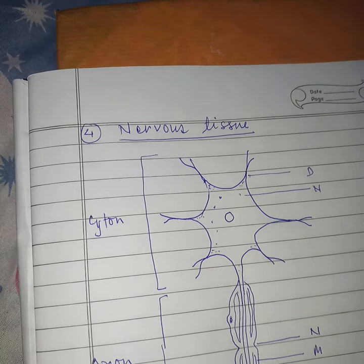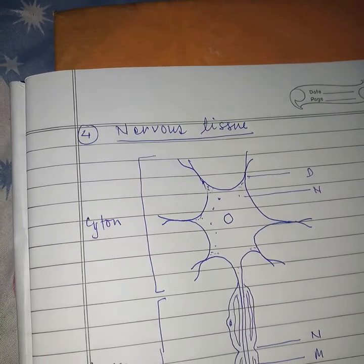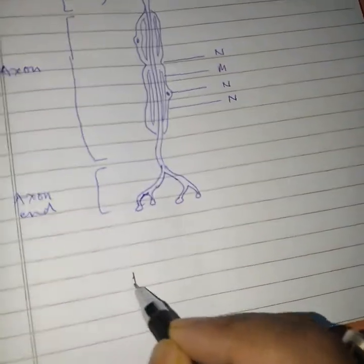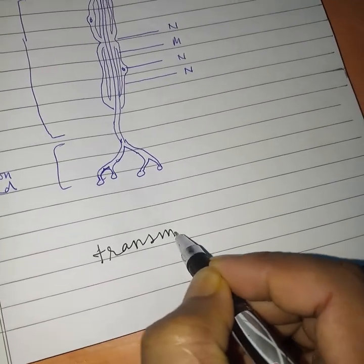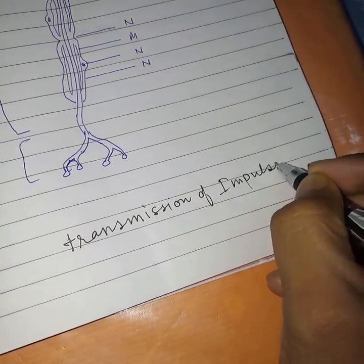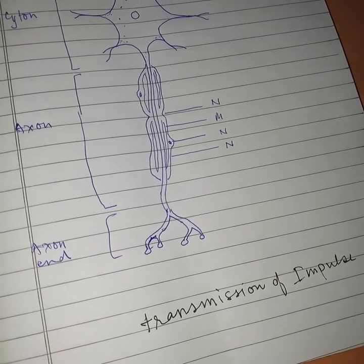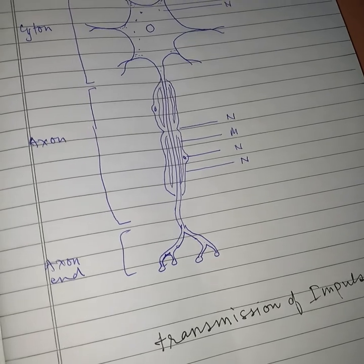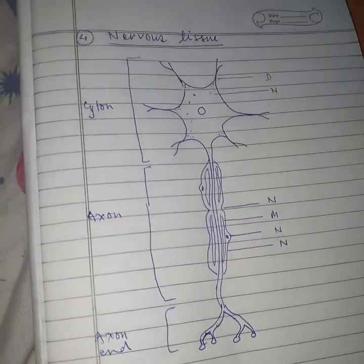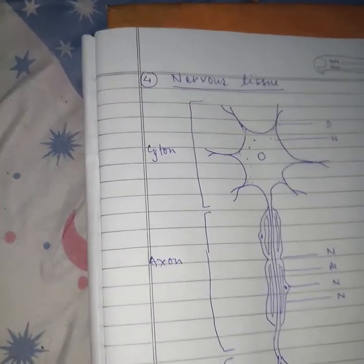Now the last type of animal tissue: nervous tissue. Nervous tissue is meant for the transmission of impulses or signals. Impulses or signals are the electrical activity that takes place in the body. If you are able to feel changes in your surroundings, that is due to the transmission of impulses by the nervous tissue.